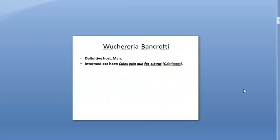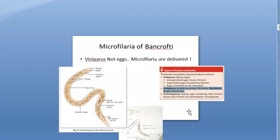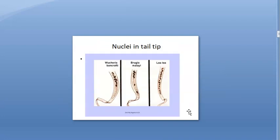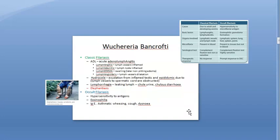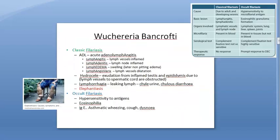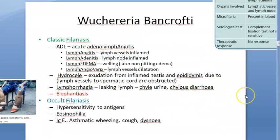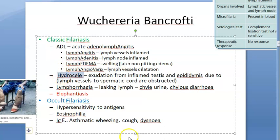The mosquito is the vector, and man is the definitive host. Wuchereria bancrofti does not lay eggs — it delivers microfilaria directly. Features of filariasis include lymphangitis, lymphadenitis, lymphedema, lymphangiovaryx, and hydrocele; even the testes can be affected.